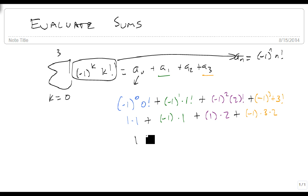Multiply all this out, it gives me a positive 1 plus a negative 1 plus a positive 2 minus a 6. That adds to 0, and so my answer is negative 4. From 0 to 3, these 4 terms add up to negative 4.